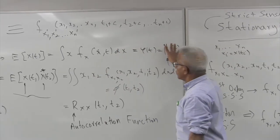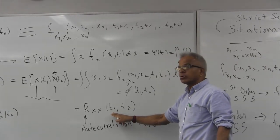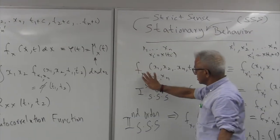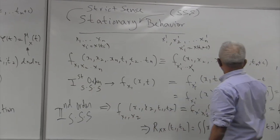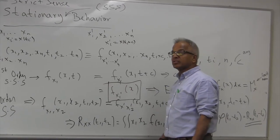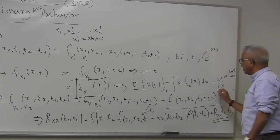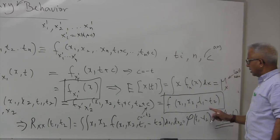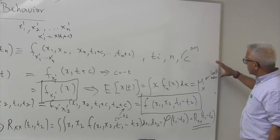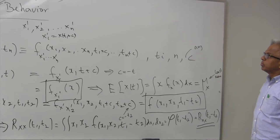If there is no stationarity, the mean could be a function of time and the autocorrelation could be a function of t1 and t2 separately. But if there is strict sense stationarity, the important thing to realize is: the first order density function is independent of time, and the second order density function depends only on t1 minus t2. The byproducts are that the mean is a constant, and the autocorrelation function only depends on t1 minus t2.